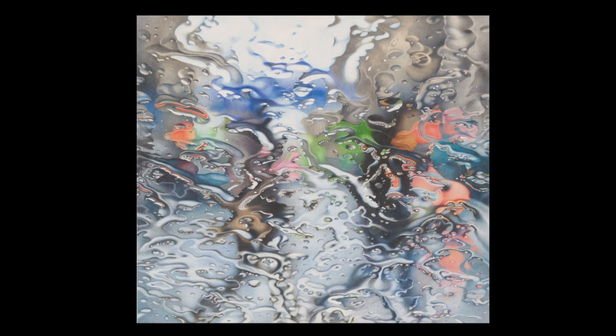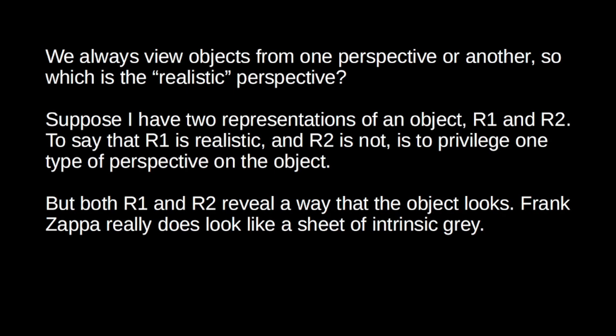So the innocent eye is not the non-perspectival eye — we are always looking at objects from one perspective or another. But now the obvious question is: which perspective counts as the realistic perspective? When I create a supposedly realistic representation, I have to be privileging a particular type of perspective on the object among many. But any perspective on an object will reveal a way that the object looks. The sheet of intrinsic grey really is a way that Frank Zappa looks, but you wouldn't take that as a realistic depiction. Some people might say that's not even a depiction of Frank Zappa at all.